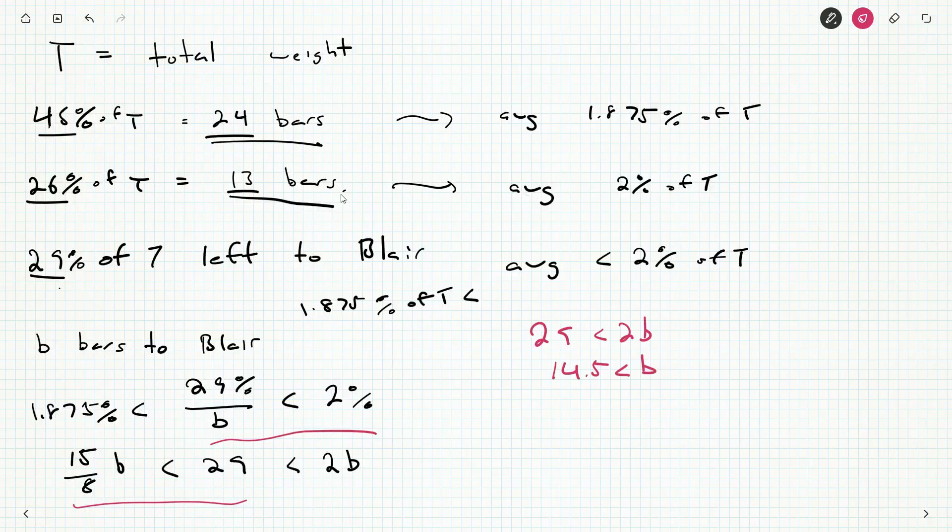And then we also have 29 has to be greater than... so 15 over 8B needs to be less than 29. Multiply by 8 on both sides, get 232 and divide by 15. We get B needs to be less than 15.46.